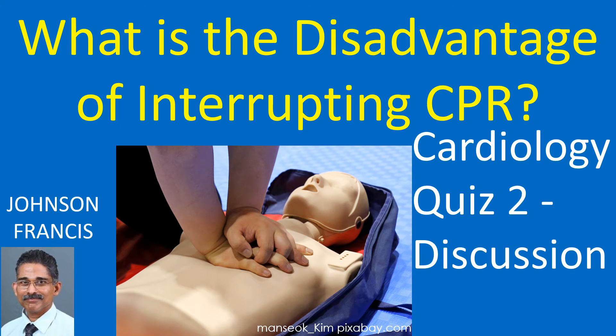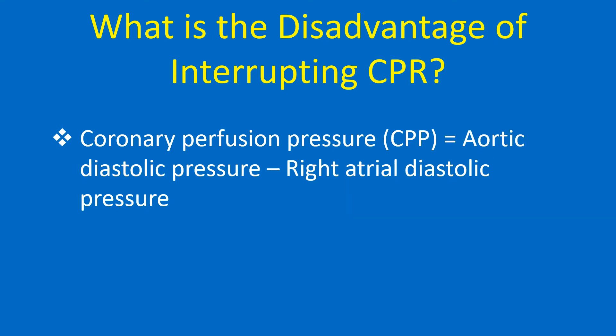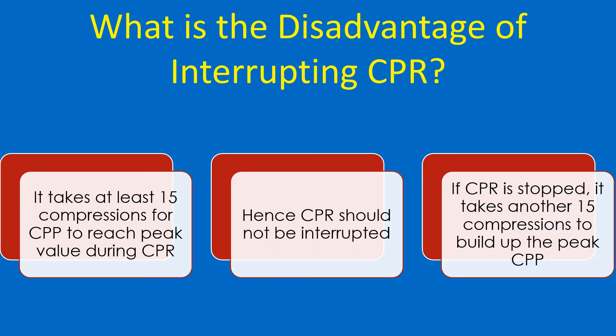What is the disadvantage of interrupting CPR? Coronary perfusion during CPR depends on the coronary perfusion pressure. Coronary perfusion pressure is equal to aortic diastolic pressure minus right atrial diastolic pressure. It takes at least 15 compressions for coronary perfusion pressure to reach peak value during CPR.